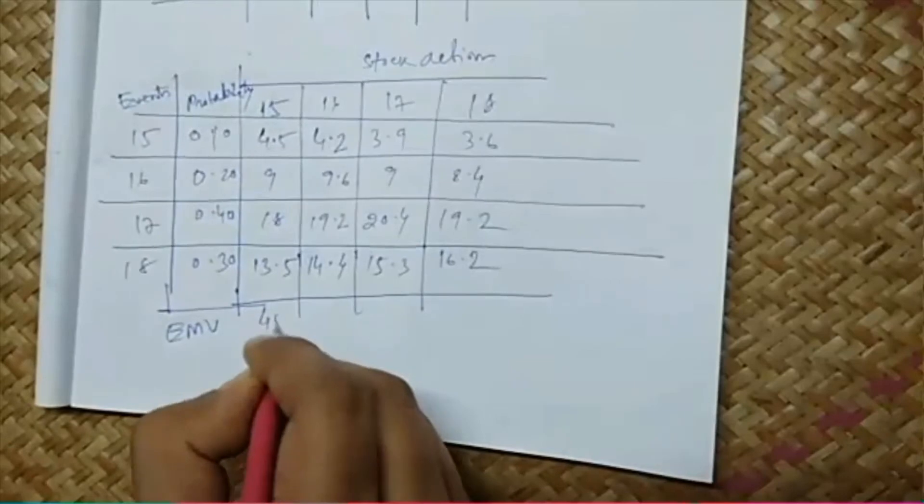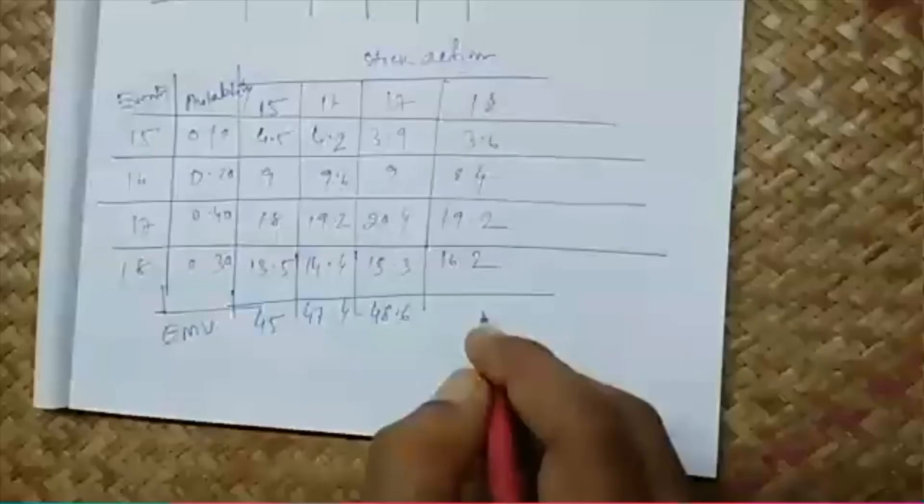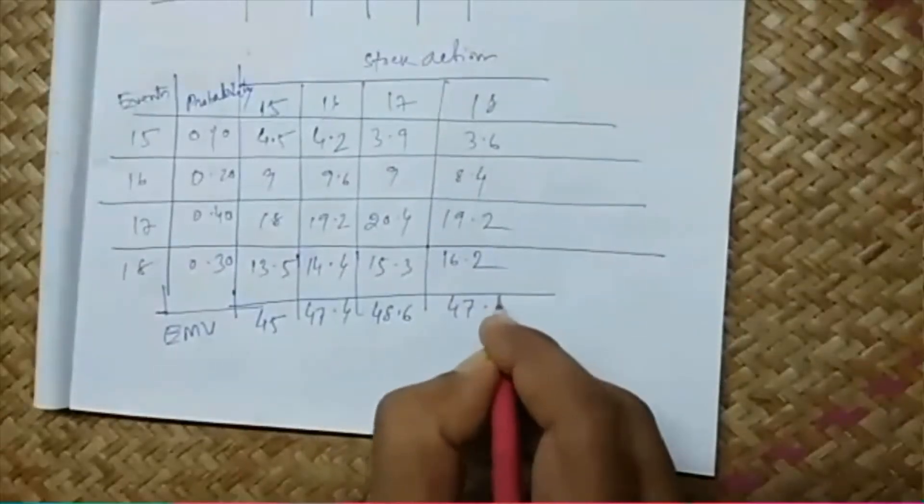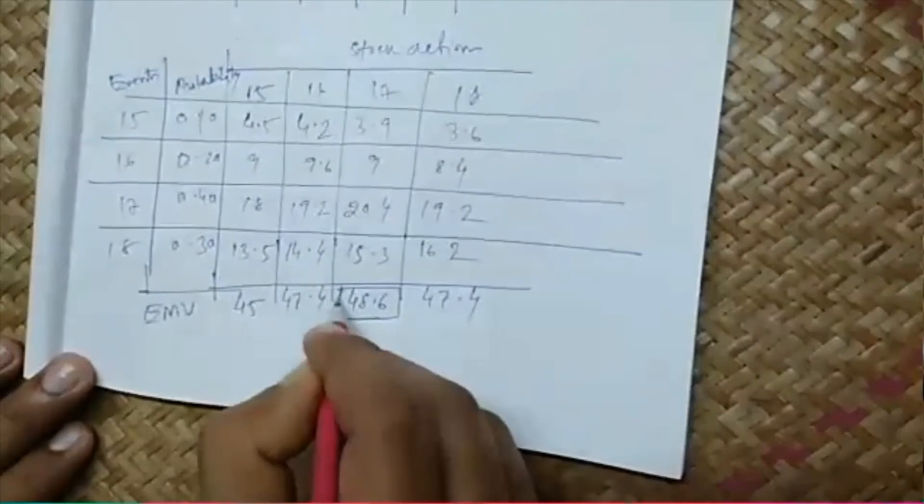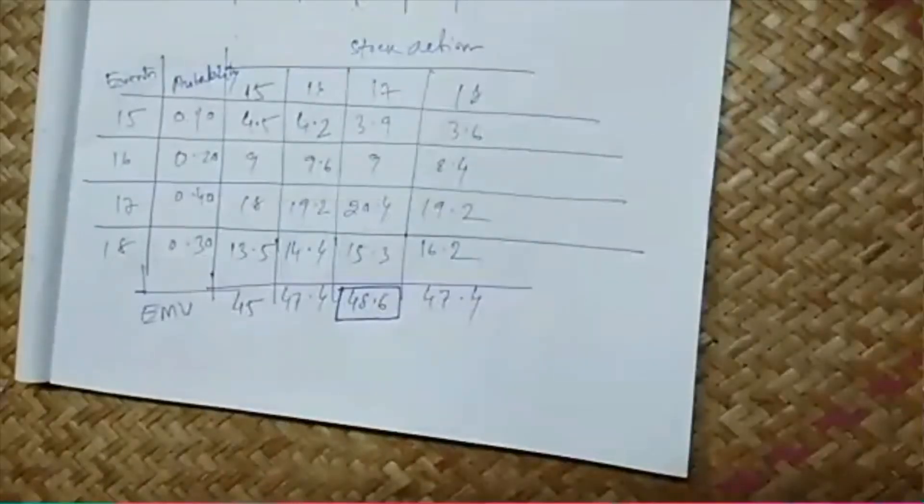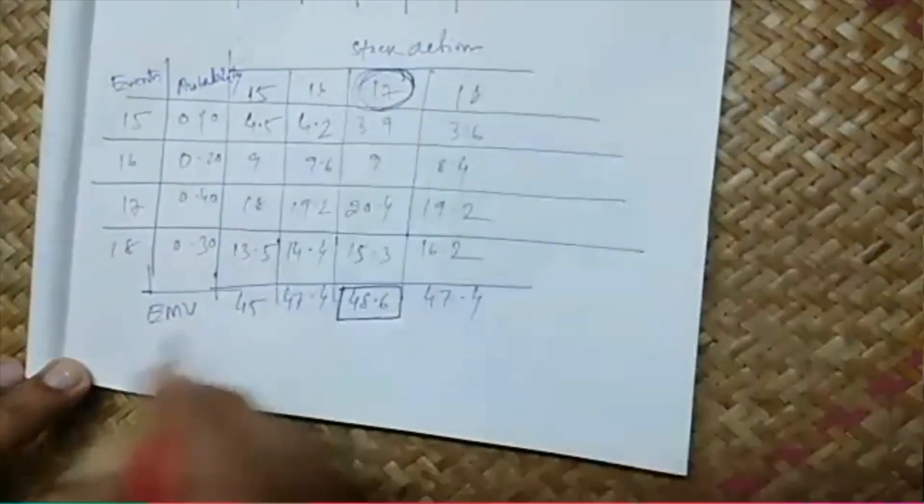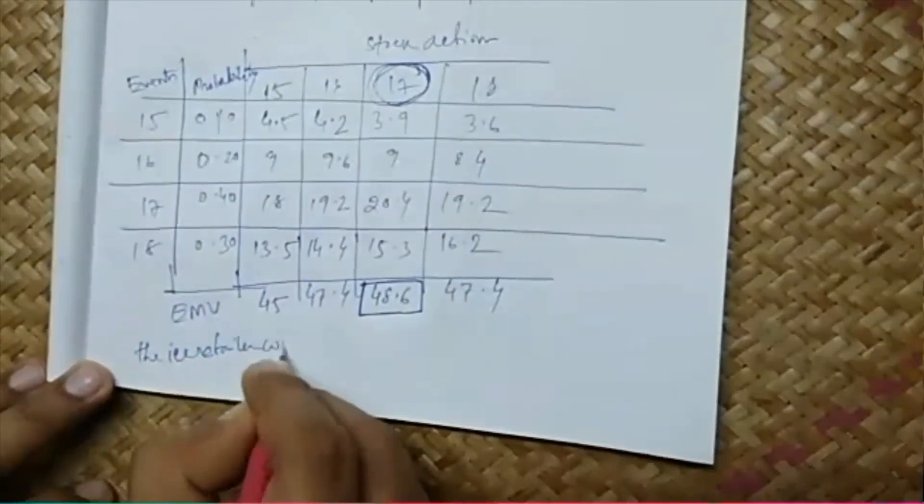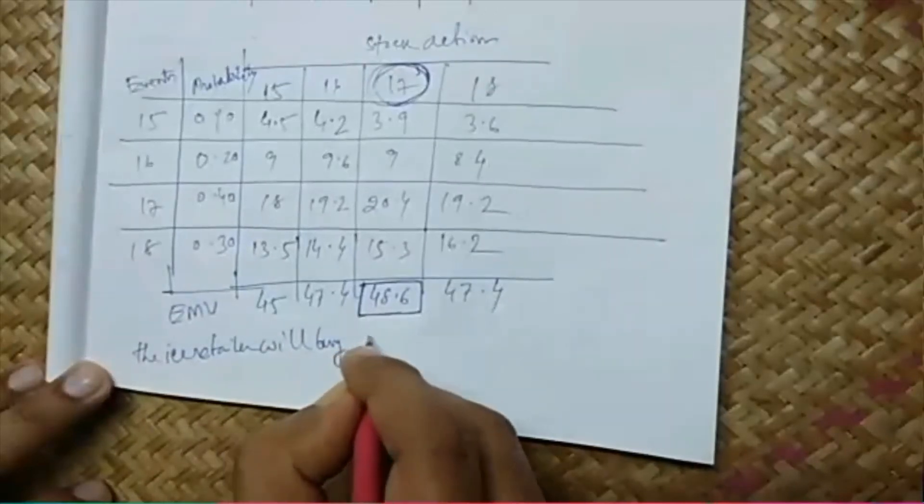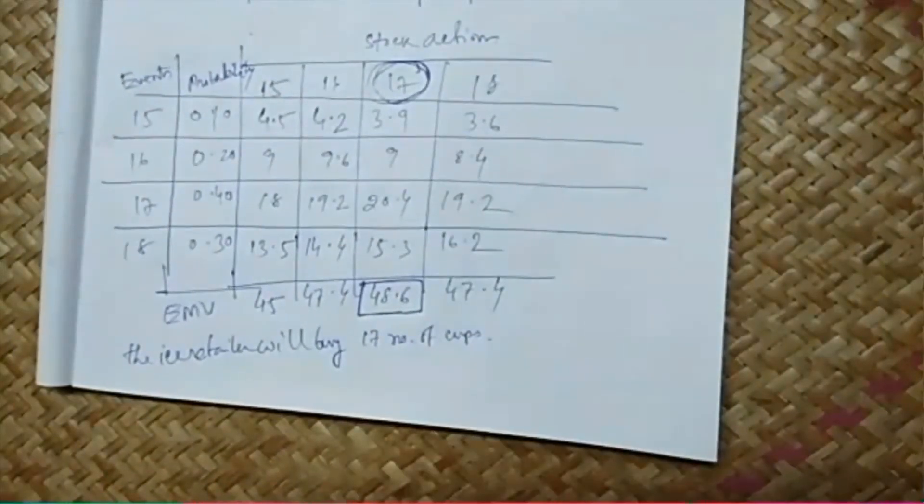Then we will find out EMV. We will add them up by column and find out EMV for each decision alternative. So it becomes 45, this becomes 47.4, this becomes 48.6 and this becomes 47.4. The maximum EMV can be found here, 48.6, that is the EMV. To get the maximum payoff, he will choose the associated stock action, 17. Our answer will be: the ice cream retailer will buy or stock 17 number of cups.